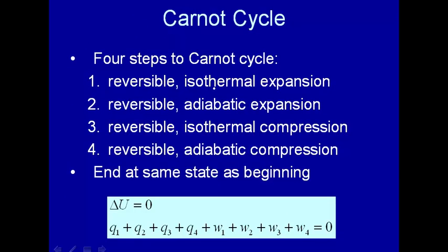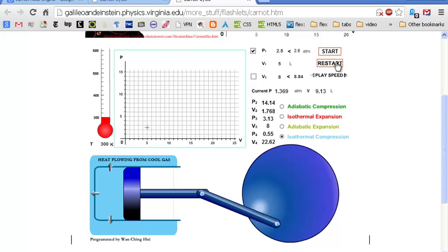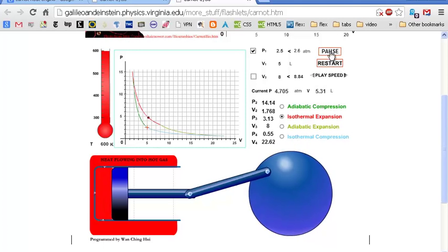The first is a reversible isothermal expansion. Let's see if we can restart this. Here we go. So this is an isothermal expansion, meaning we have the hot reservoir. We have two heat reservoirs. Here's the hot, and it's transferring heat into here to maintain this at a constant temperature and pushing the piston back. So that's the first step right there.